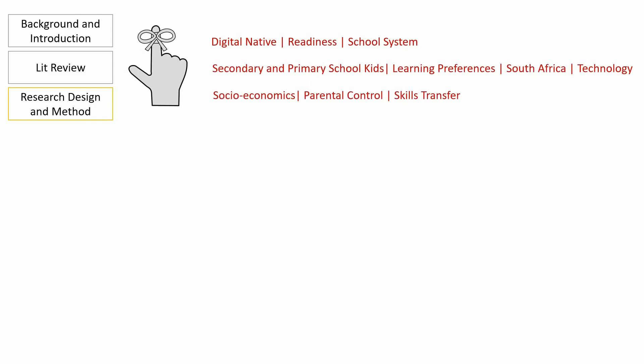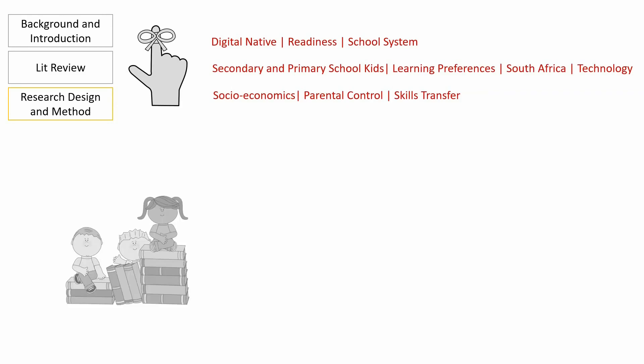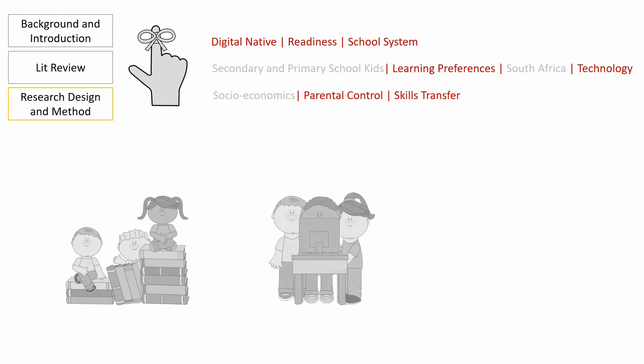Considering our written-down topic, research questions, and lit review arguments, our data collection plan could look like the following. We will collect data from primary and secondary school kids — the study would be useless if we don't. To be more specific, we will be collecting data from primary and secondary school kids in South Africa, taking care of the key concepts: secondary and primary school kids and South Africa. Since part of our key concepts is socio-economic status, we need to find schools in South Africa from different neighborhoods — schools located in low income, middle-of-the-road income, and affluent communities. We will also ask these kids about their interaction with technology to establish if we are dealing with a digital native as a generation or as an elite, taking care of the key concepts: technology and digital native.